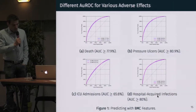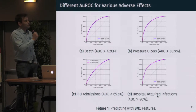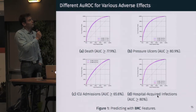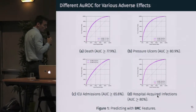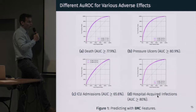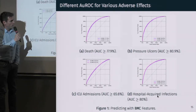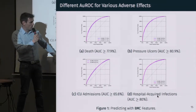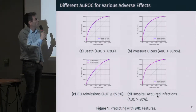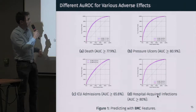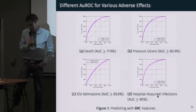We considered several different adverse effects and obtained several areas under the ROC curves. Our predictive models work best for predicting hospital-acquired infections and pressure ulcers, but we can still use them for predicting death, and they perform a little less well for predicting ICU admissions.